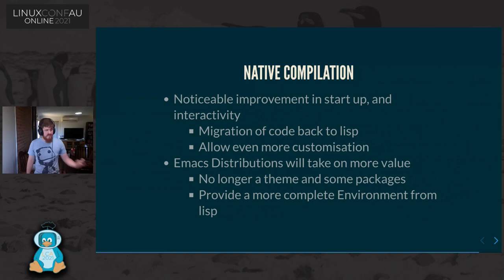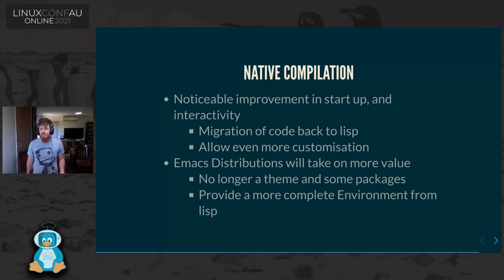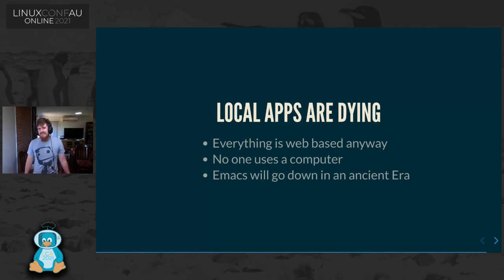Native compilation is going to allow us to write more Lisp in Lisp, more Emacs in Lisp, and migrate code back to Lisp. I think the distributions we're starting to see — Doom Emacs, SpaceMacs, Prelude — might take on a larger role and become more like your VS Code to your Atom: a more complete offering. But it kind of doesn't matter anyway because this presentation is in a web browser and no one's really using a computer anymore — everyone's on phones and tablets. So I guess Emacs is just going to go down in an ancient era of computing.